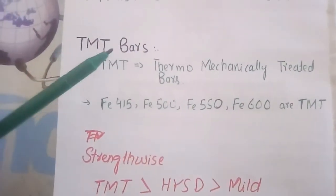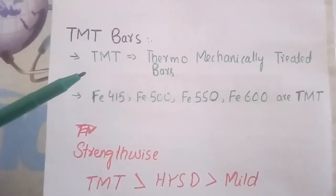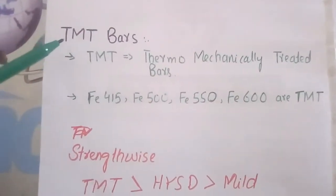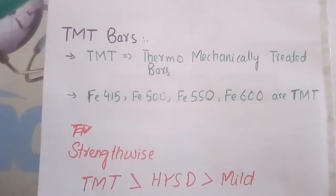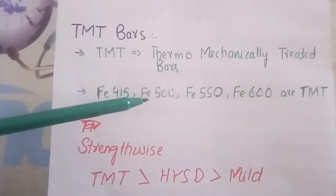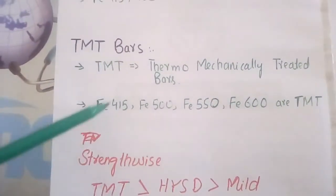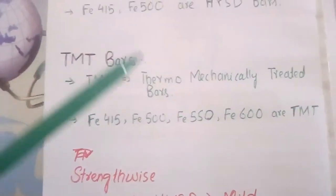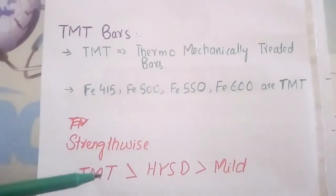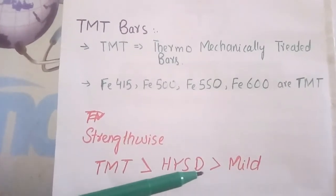TMT bars are formed by passing a hot rolled steel bar through cold water. By this process, the outer surface of the bar becomes harder than the inner surface, so the yield strength of TMT bars is more than both HYSD and mild steel bars. TMT bars are available in grades Fe 415, Fe 500, Fe 550, and Fe 600. Strength-wise, TMT bar is strongest, followed by HYSD bar, then mild steel bar.